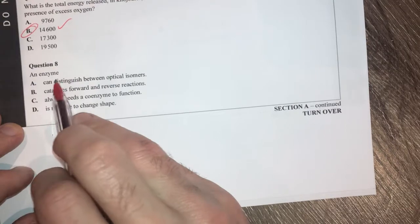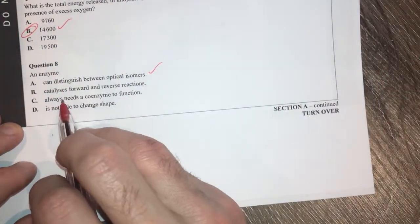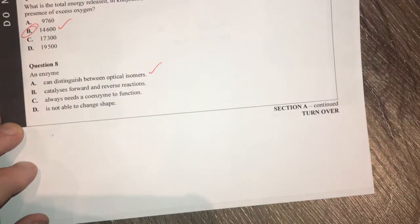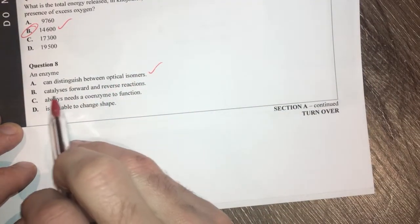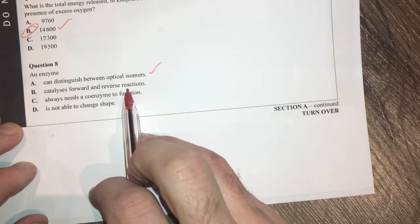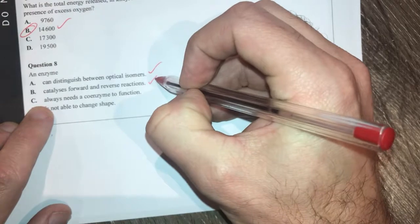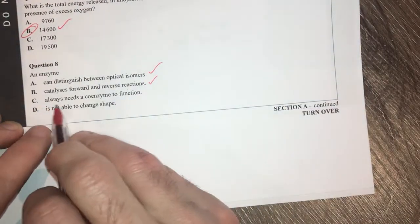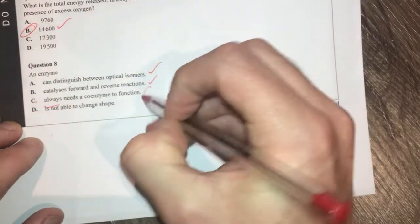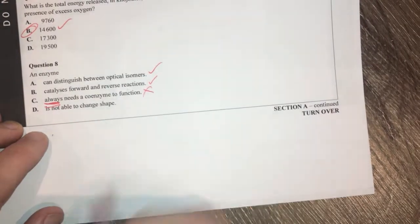Question 8. An enzyme. An enzyme can distinguish between optical isomers. That's fair enough because they are obviously very specific and the orientation of the bonds are important. Catalyzes the forward and reverse reactions. I know a catalyst does that so I'm going to say that looks pretty good. Always needs a coenzyme to function. Always there makes that not right. They only sometimes need to.